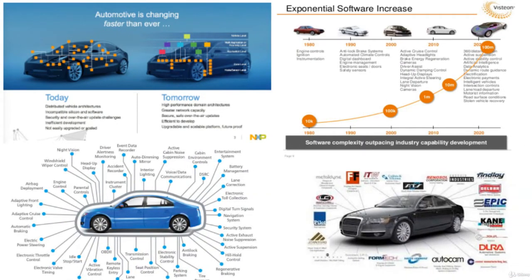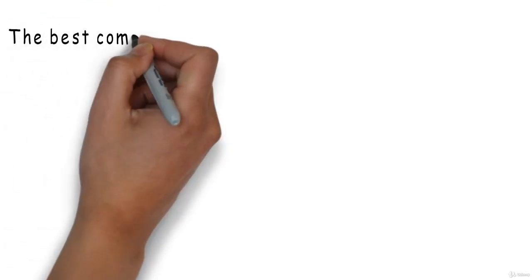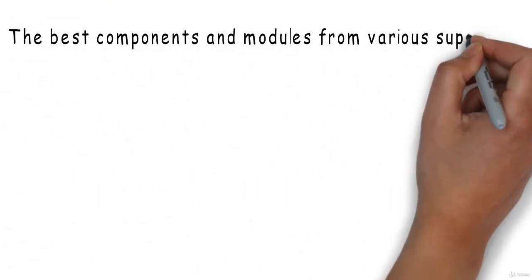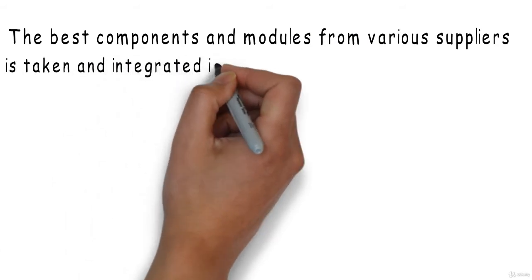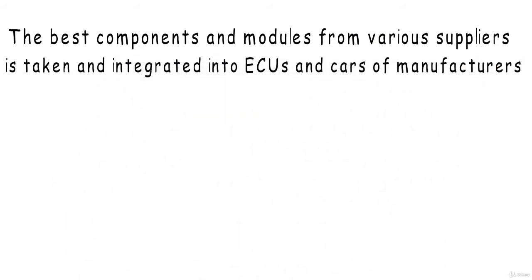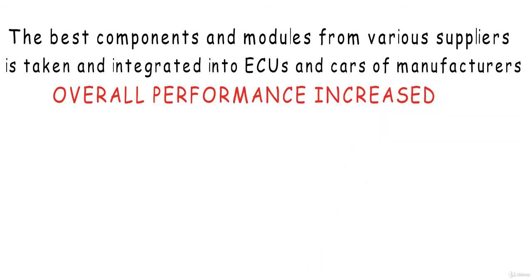All manufacturers and suppliers of automotive industry come together and work at improving the capacity of the car. The best components from various companies must be taken and integrated in car and ECUs so that the overall performance is increased.